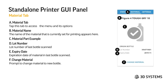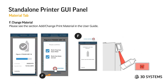On the material tab, you get the material name at B. At C you'll have the material part example image. D is the lot number or batch number of your material. E shows the expiry date — the expiration date of the material in the last bottle scanned. If you need to change material you can click the Change Material button, which prompts you to change to a new bottle. There's a QR code on the bottle; when you start a print you'll be prompted to scan it — the scanner is located underneath the user panel.